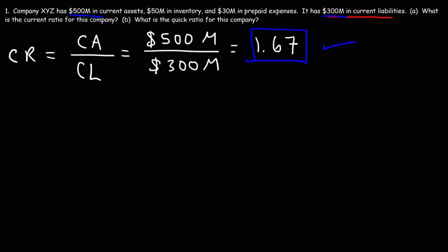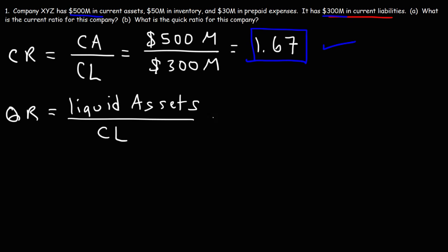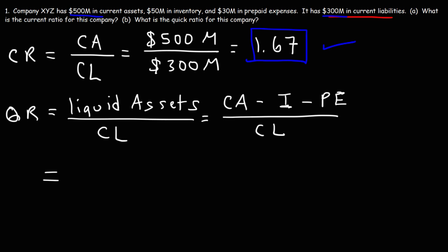Now let's move on to Part B: what is the quick ratio for this company? The quick ratio is another liquidity ratio — it also measures the ability of a company to pay its short-term financial obligations. The quick ratio equals the liquid assets of a company divided by the current liabilities. That's the current assets minus inventory minus any prepaid expenses, divided by the current liabilities. Inventory is not really a liquid asset because if a company has to sell it quickly, it may have to offer it at a discount.